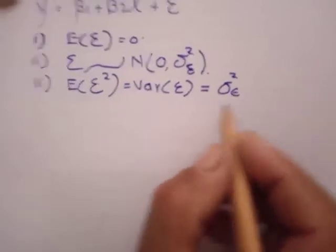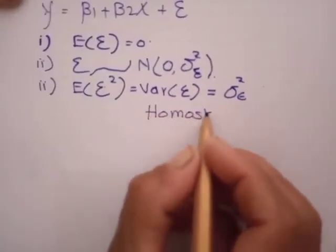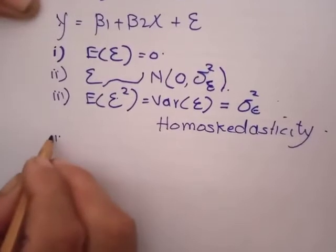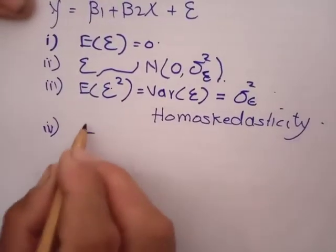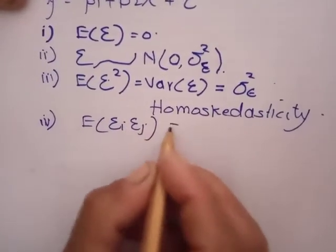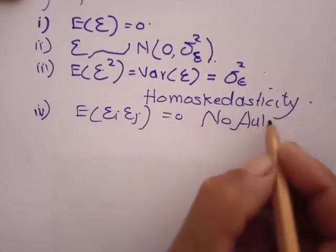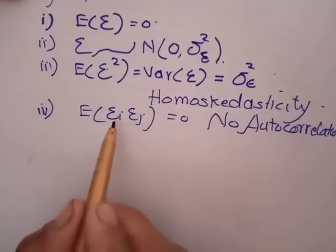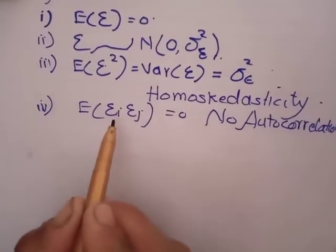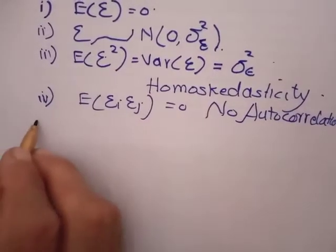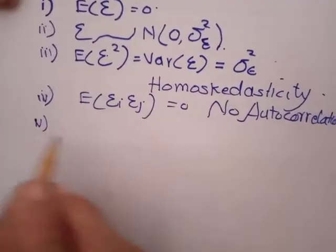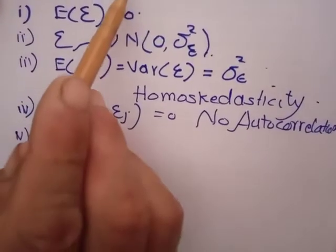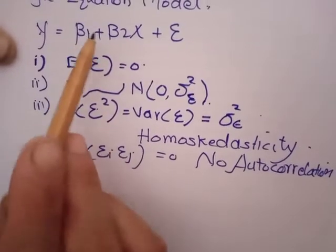The condition of constant variance is regarded as homoscedasticity. The fourth assumption is no autocorrelation, which implies that successive residual terms should be independent. The fifth assumption is that there should be no multicollinearity among the explanatory variables if the regression is a multiple regression.